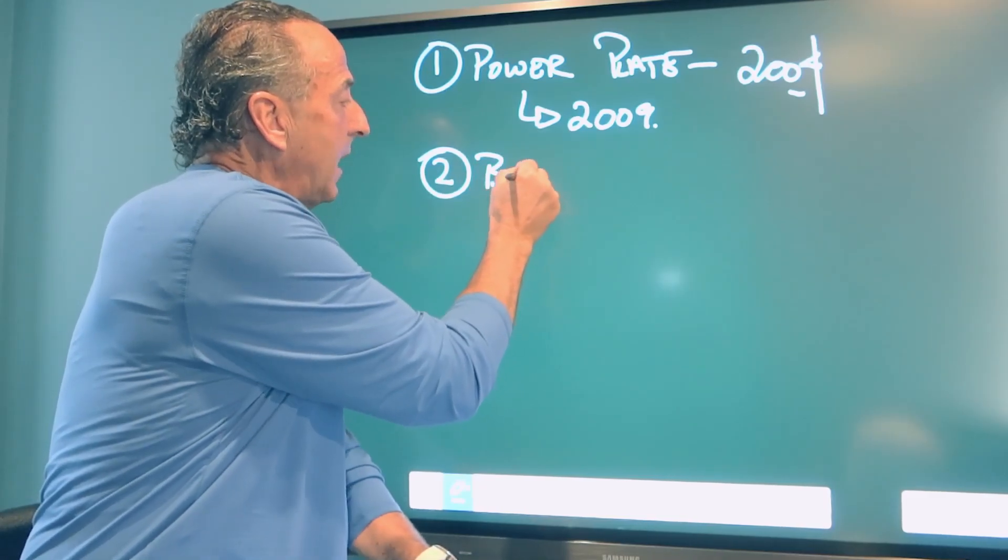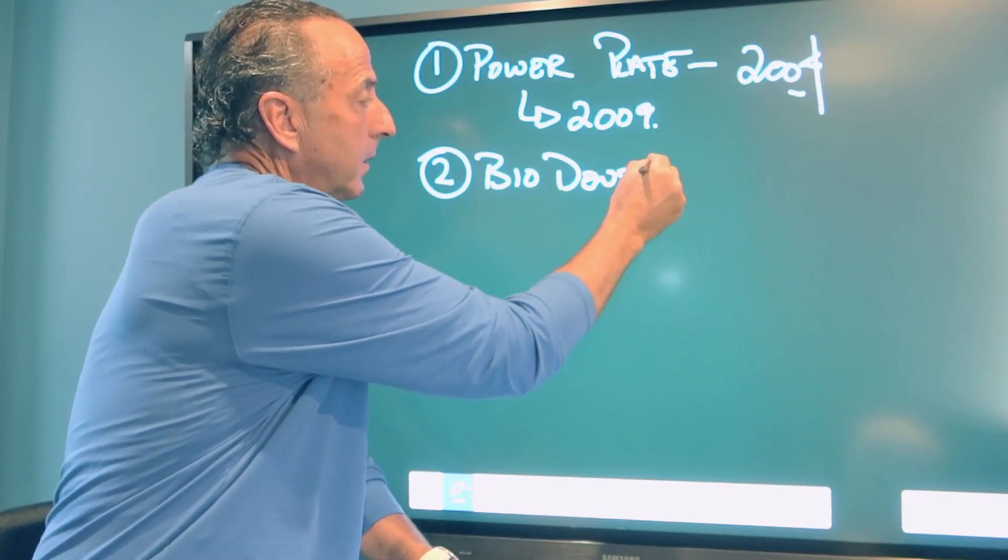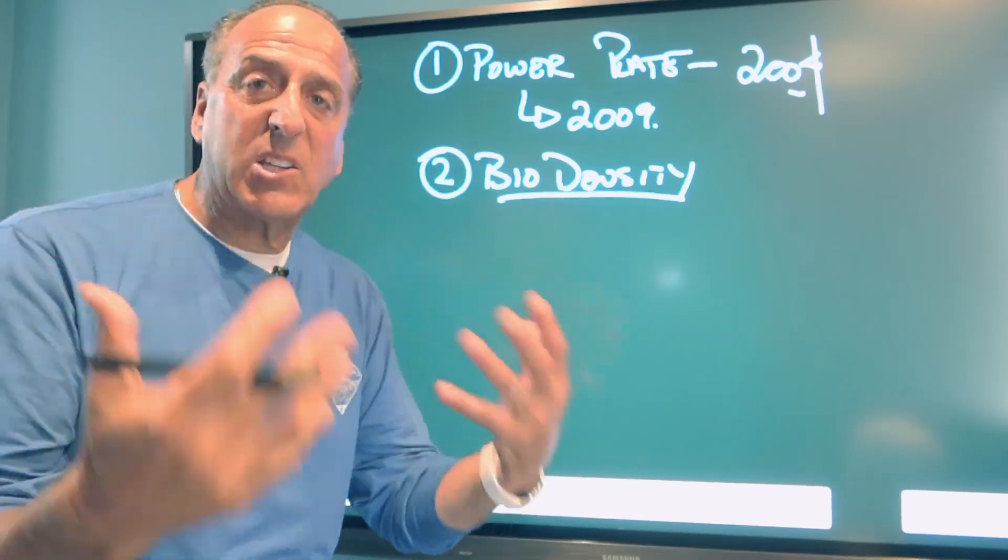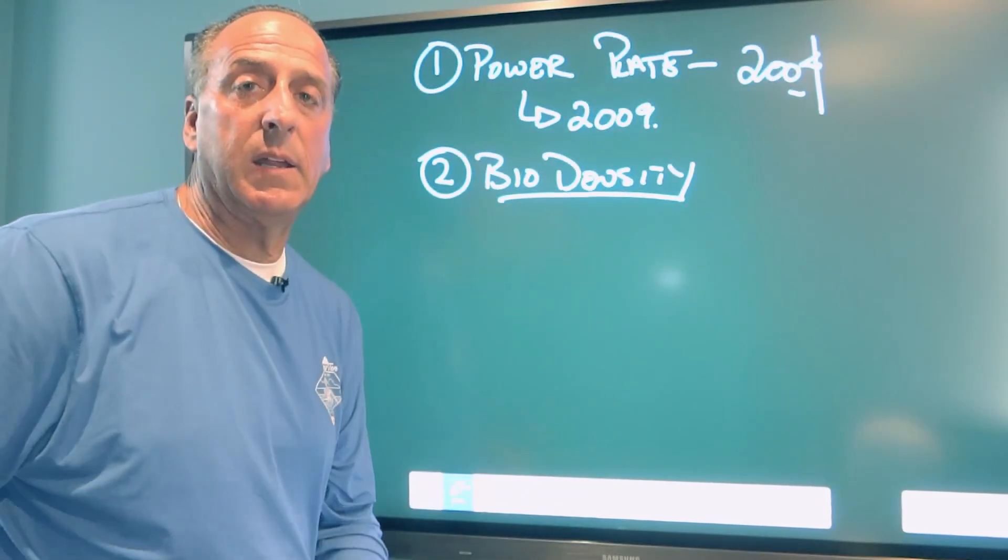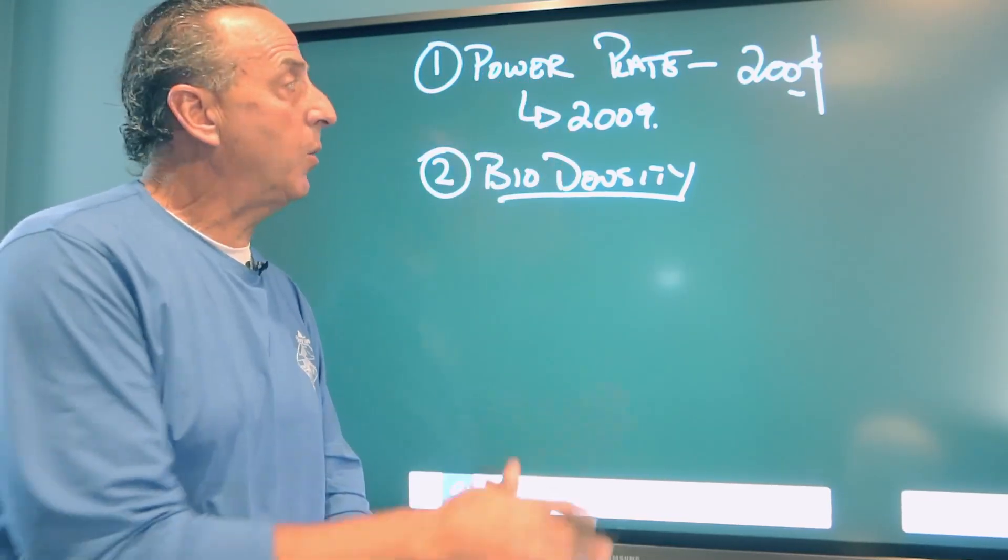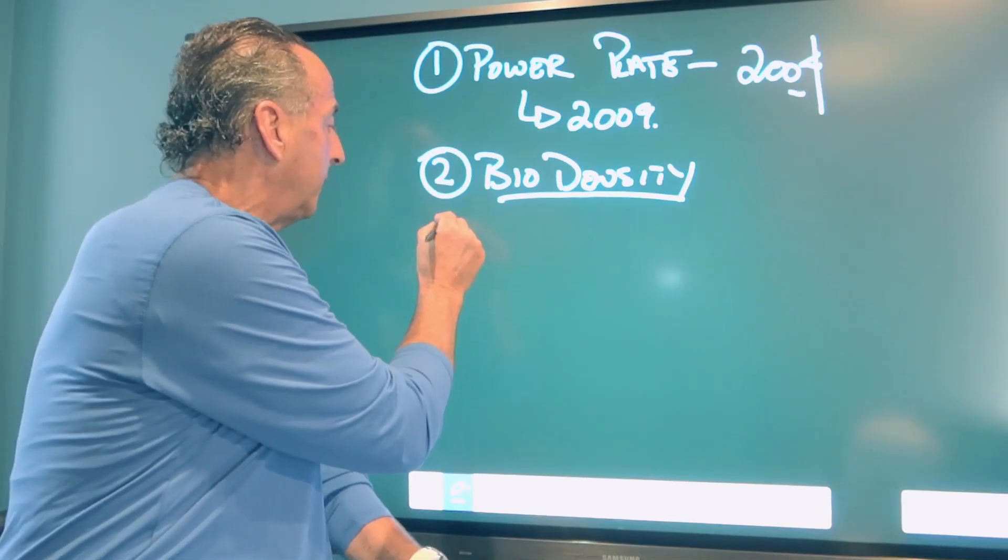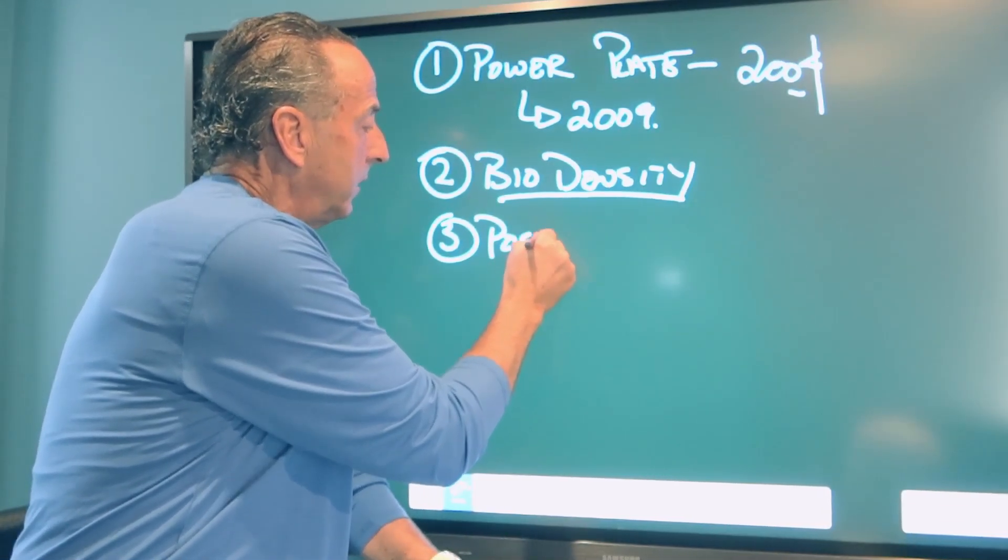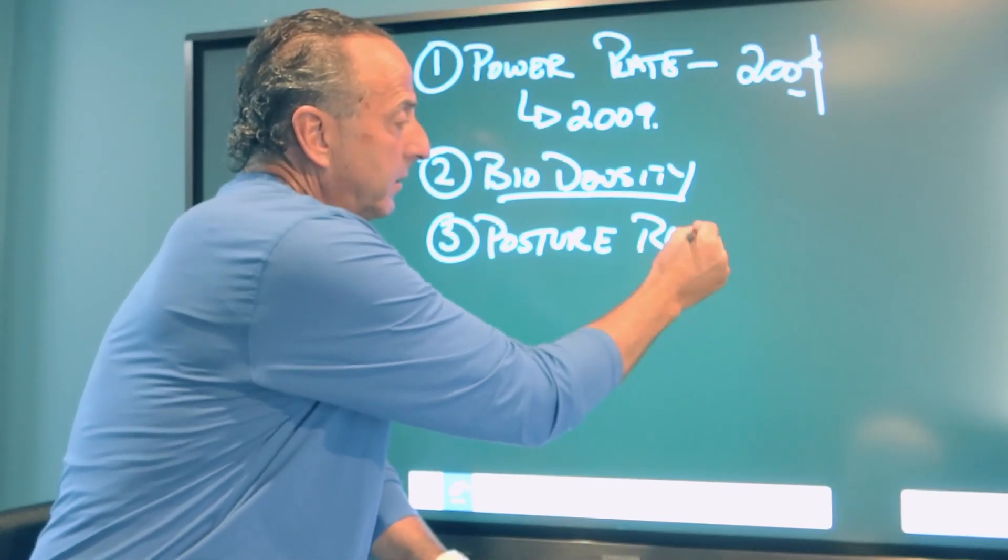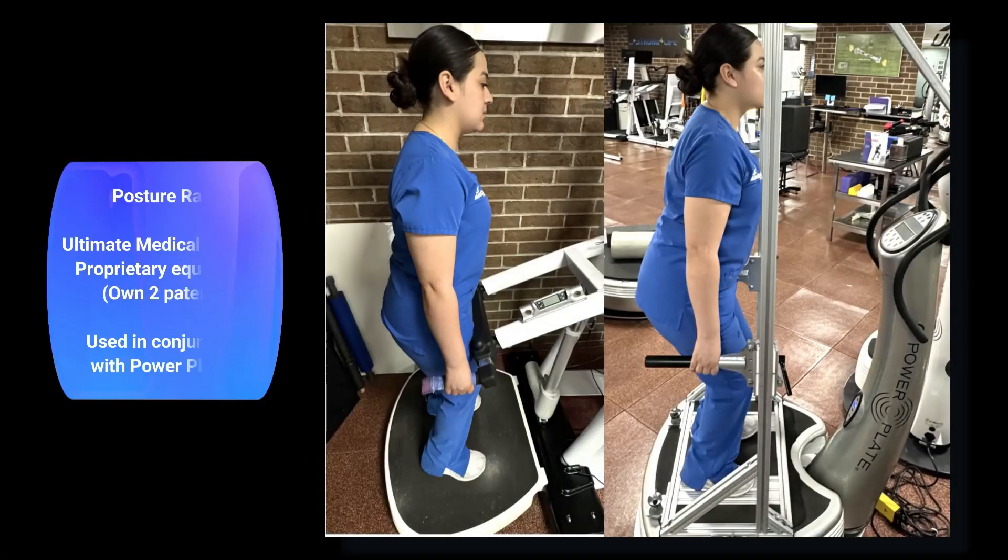Two, we use Bio Density, isometric maximum loading, bone stimulating piece of equipment. These two go together. We want a stronger, more stable spine. Three, we use Posture Rack. Posture Rack is my patent that goes on the Power Plate. Posture Rack helps develop the lumbar spine for stability and increase that strength by training you how to actually use your lumbar spine correctly, properly by doing a squat. It's the only machine in the world that does this. I have two patents on this.